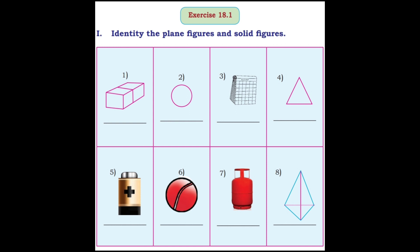Now we will see exercise 18.1, first question: identify the plane figures and solid figures. First one: cuboid — it is a solid shape. Second one: circle — it is a plane figure. Third one: a solid figure. Fourth one: triangle — a plane figure. Fifth one: battery cell — a solid figure. Sphere — a solid figure. Cylinder — a solid figure. Last one: kite shape — this is a plane figure. Look at the shape and identify whether it is solid or plane and write it down.